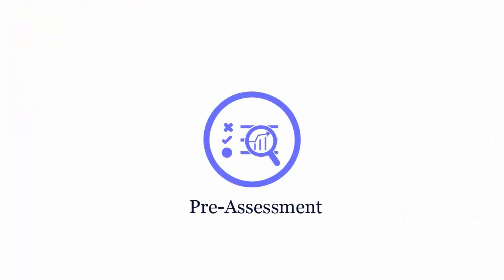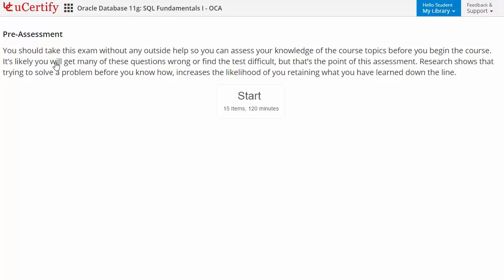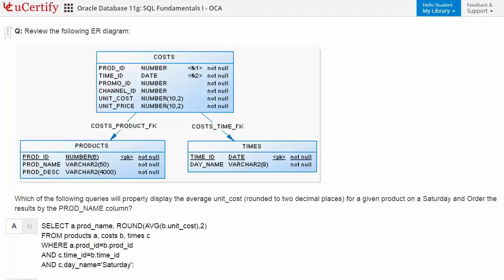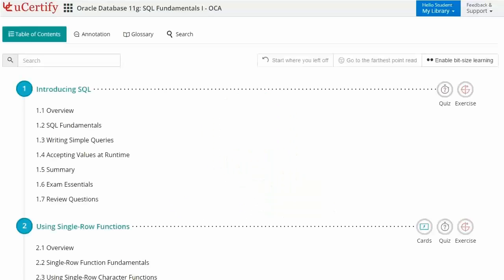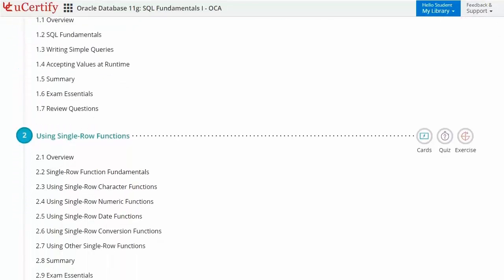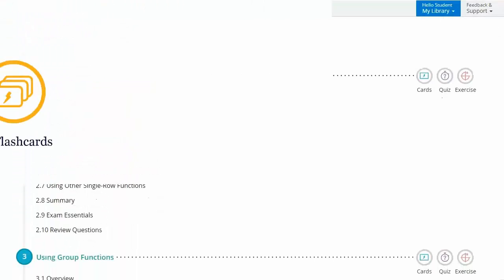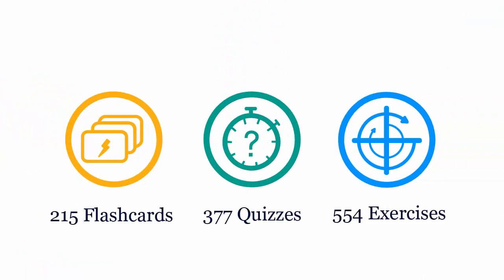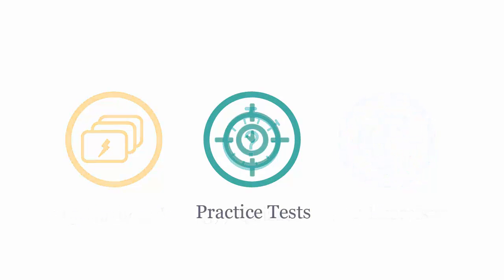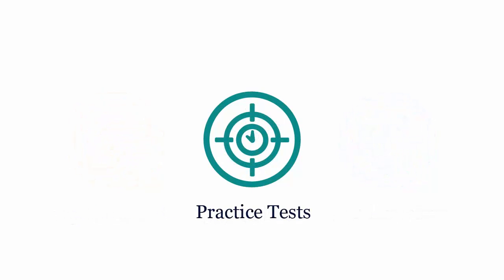The pre-assessment helps you identify areas for improvement before you start your prep. For example, you need to review an ER diagram and answer questions accordingly. Interactive chapters and lessons comprehensively cover the 1Z0-051 certification exam objectives, including several lessons with interactive learning resources such as over 215 flashcards, 377 quizzes, and 554 exercises.